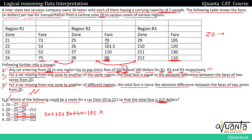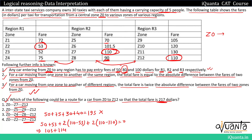Option 4, route Z0→Z2→Z7→Z12: Z2 is in R1, entry fees = 50, fare to Z2 = 53. From Z2 to Z7 are in different regions, fare = 2 × |110 - 53| = 2 × 57 = 114. From Z7 to Z12 are in different regions, fare = 2 × |110 - 110| = 0. Total = 50 + 53 + 114 + 0 = 217. Option 4 is the correct answer.